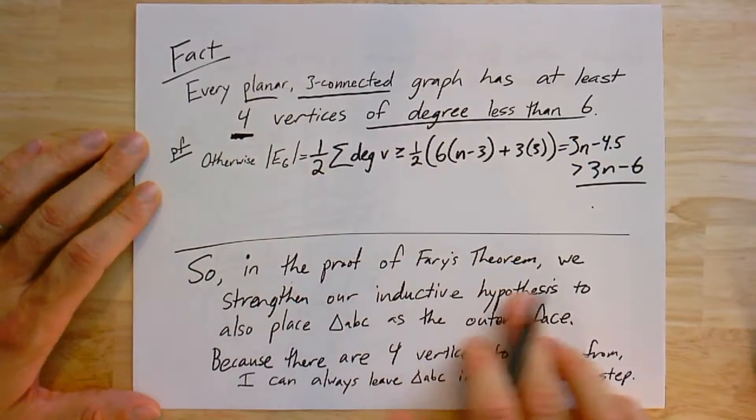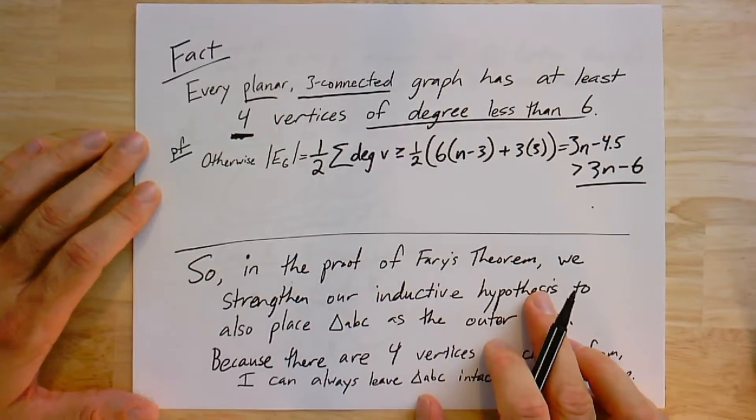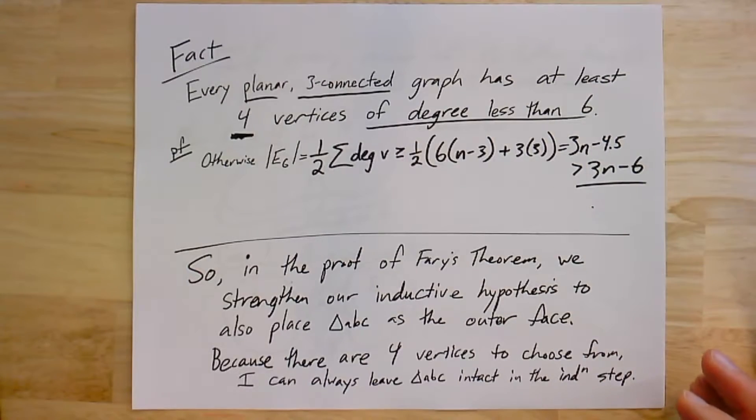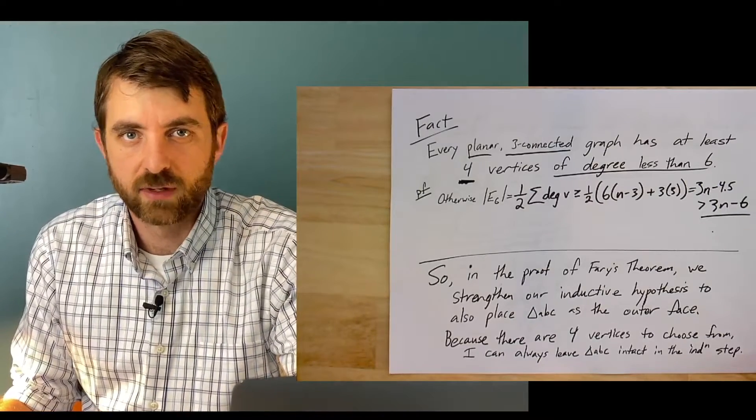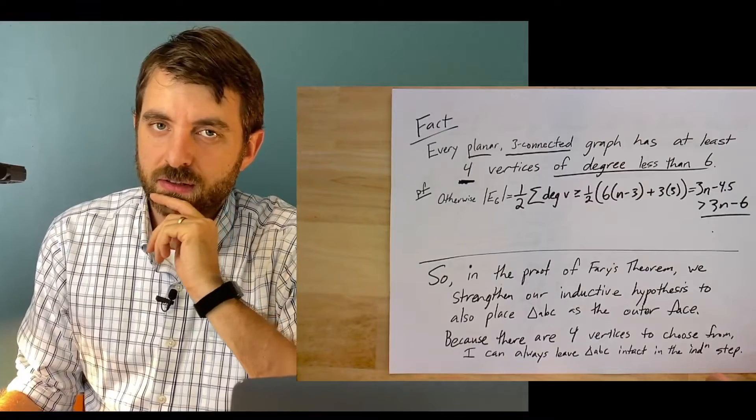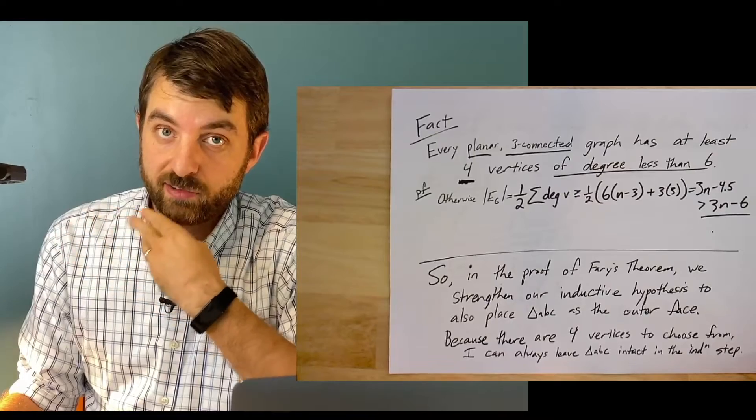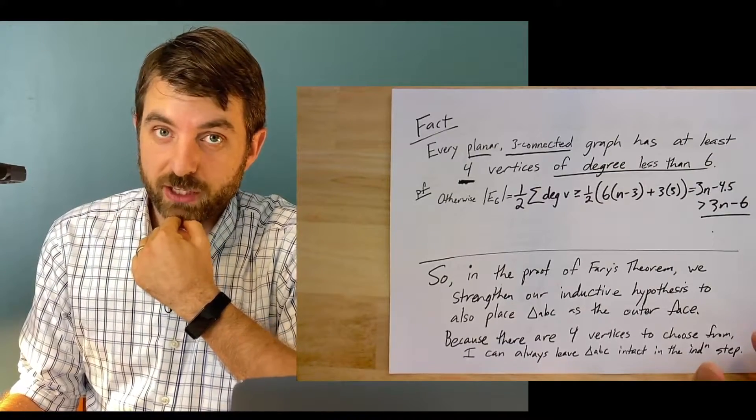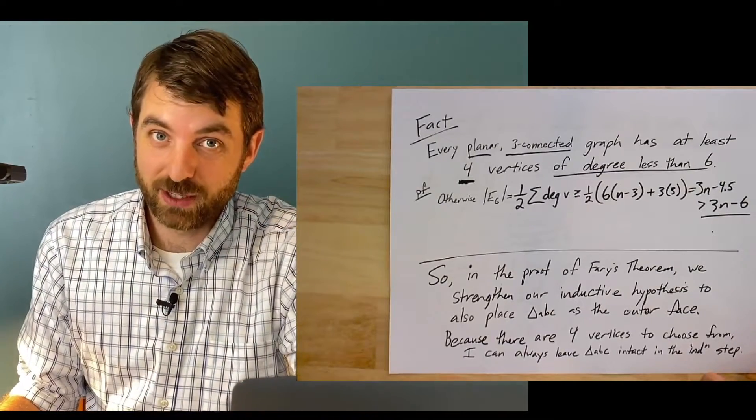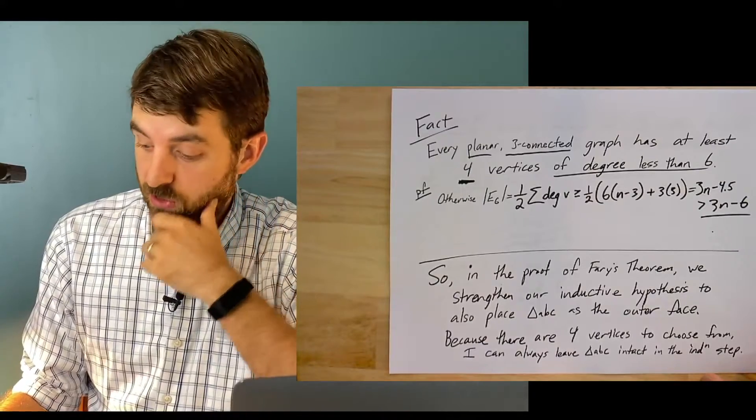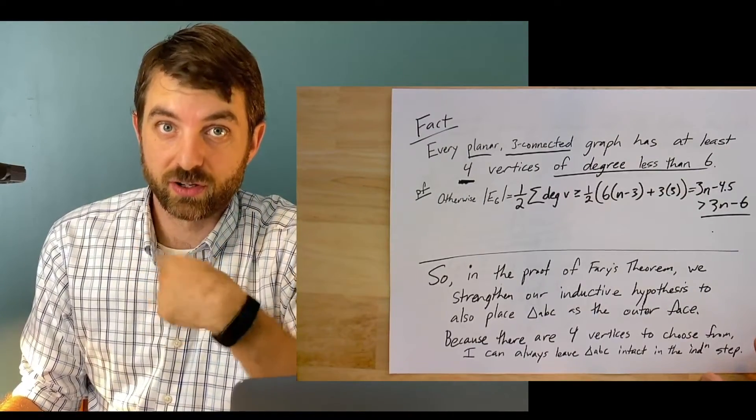This is going to give us our four low degree vertices, vertices of degree less than 6. The main idea is that in the proof of Fary's theorem, when it was time to remove a vertex, we just assumed we had one. Now we assume we have four, and we can make sure that we choose one that was not A, B, or C.